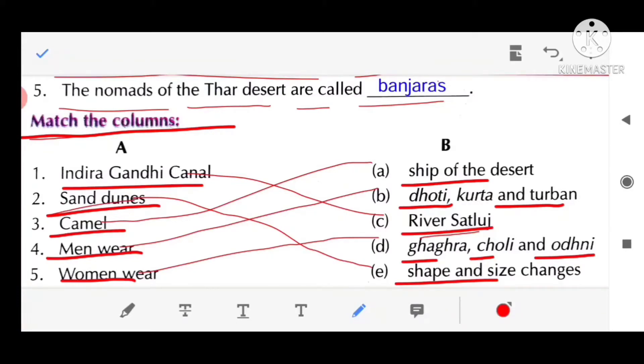Sand dunes, shape and size changes. Camel, ship of the desert. Men wear dhoti, kurta and turban.